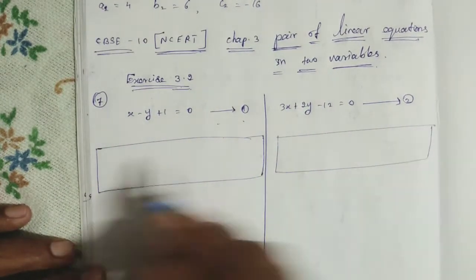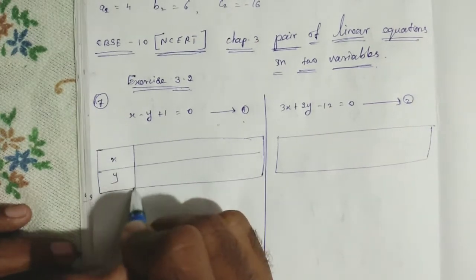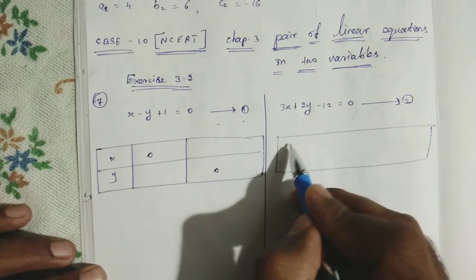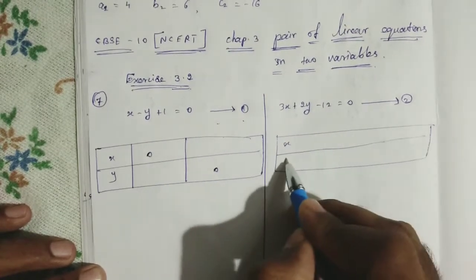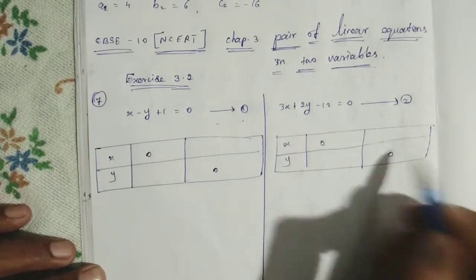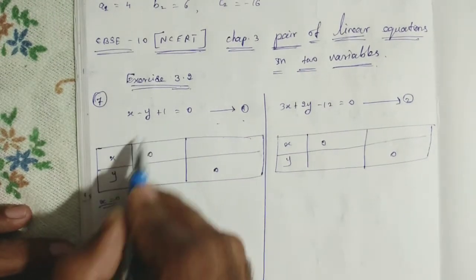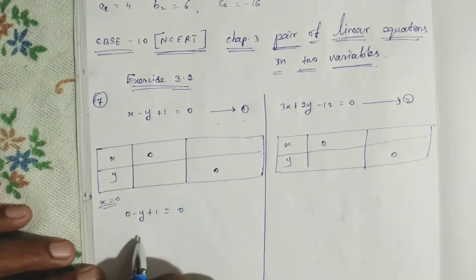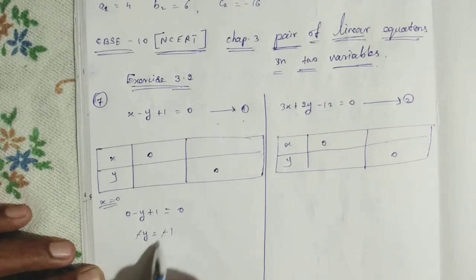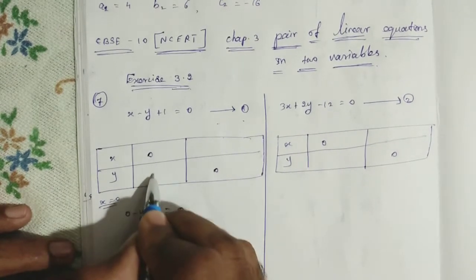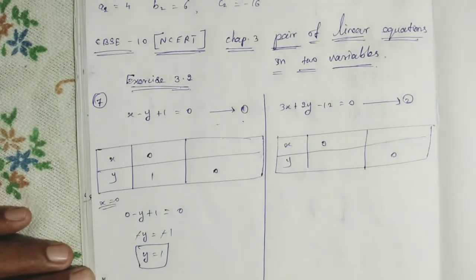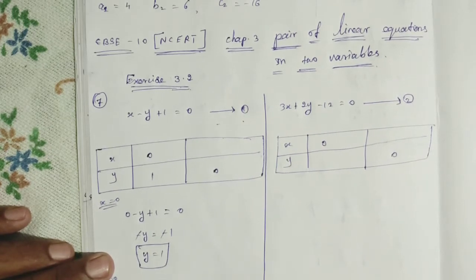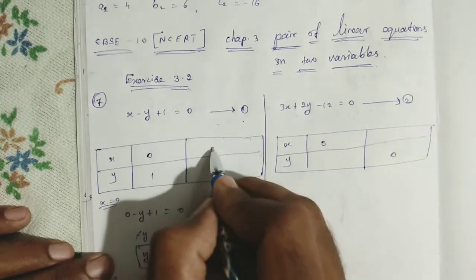For equation 1, put x equal to 0: we get 0 minus y plus 1 equal to 0, so minus y equals minus 1, therefore y equals 1. That gives point (0, 1). Then put y equal to 0: x minus 0 plus 1 equal to 0, so x equals minus 1. That gives point (-1, 0).